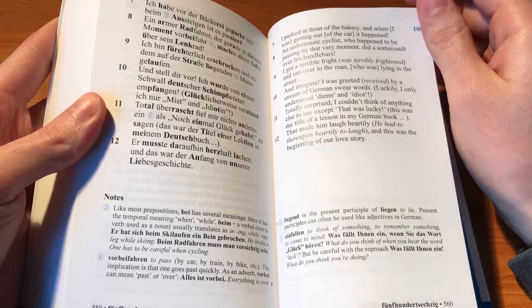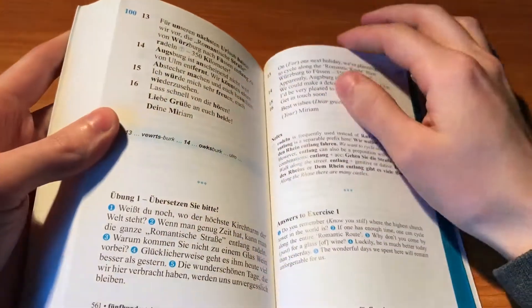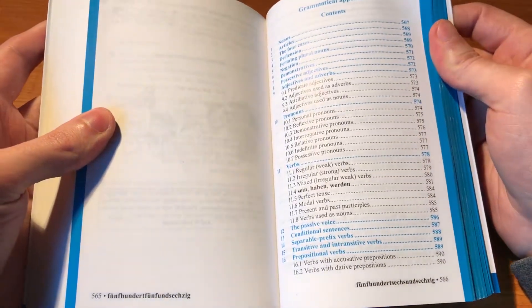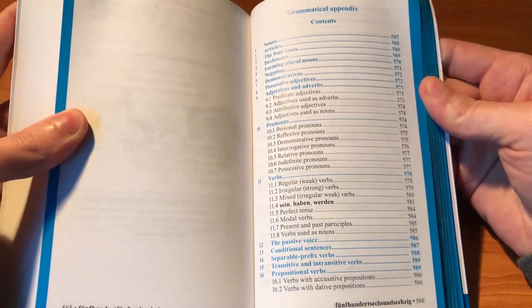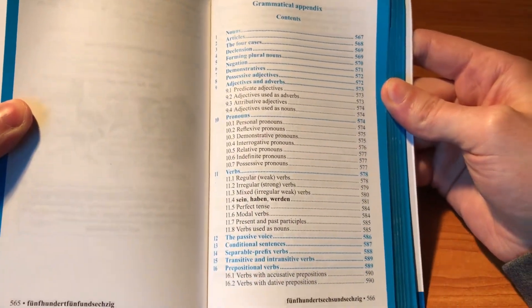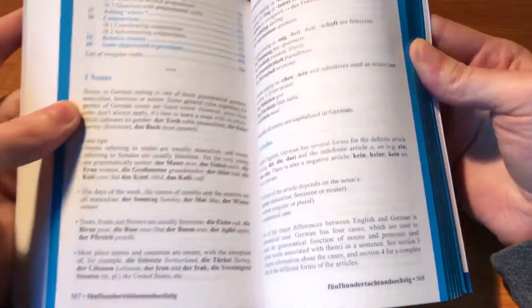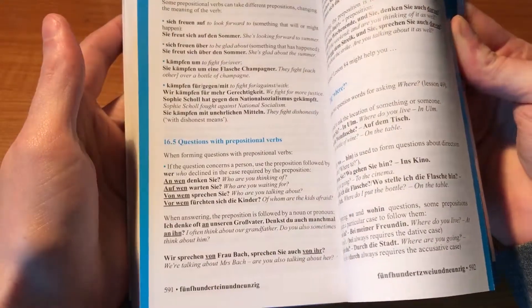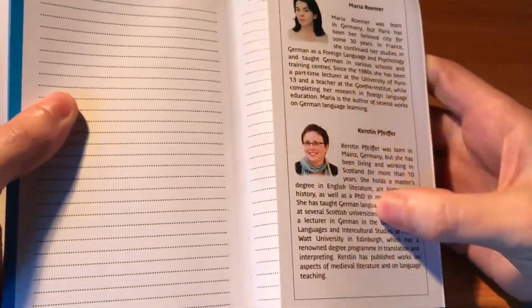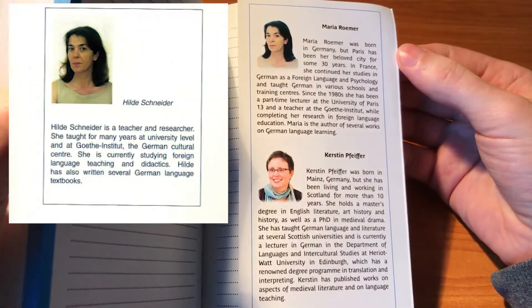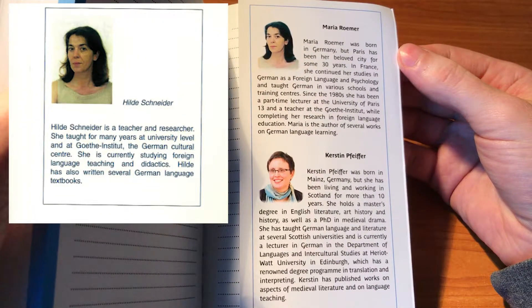Next up you have the grammatical appendix, which can be useful if you want to look up certain grammar points or look at some grammar tables. I'm just going to skim through these, but very useful to have. And then we have a little bit about the authors. One random thing I noticed going through this and the previous edition was that Hilde Schneider and Maria Römer look exactly like the same person. Maybe they're twins, or she changed her name, or perhaps it's just a mistake — I'm not sure.